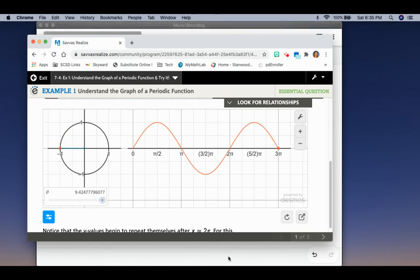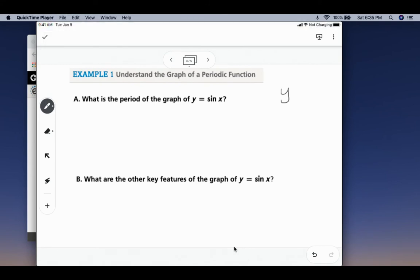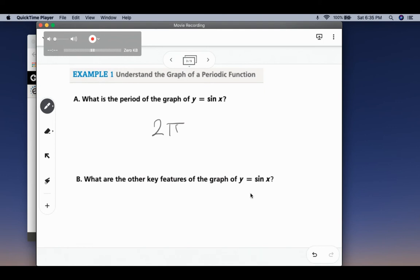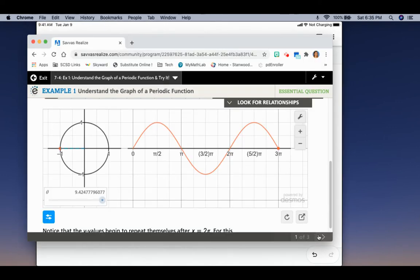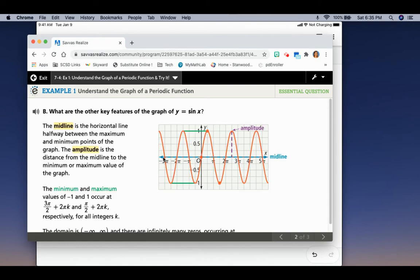So if we go back to our notes here, what is the period of the graph of y equals sine of x? If we think about that illustration we just looked at, we're going to reach the same point as soon as we've gone around the unit circle. So the period of the graph of y equals sine of x is just 2 pi. And then it says, what are other key features of the graph of y equals sine of x? So we have a midline at 0.